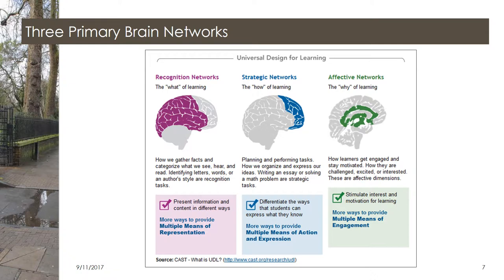Strategic networks are the how of learning. They cover how we plan and perform tasks, how we organize and express our ideas. Writing an essay or solving a math problem are strategic tasks. To address strategic tasks, we differentiate the ways in which students can express what they know. This is covered by multiple means of action and expression.